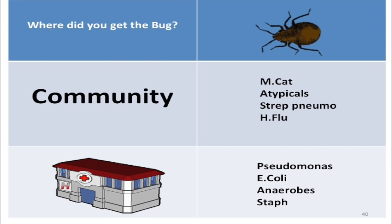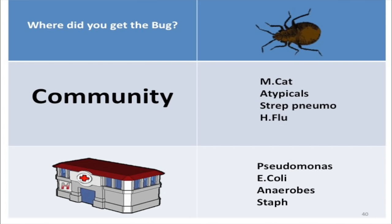For pneumonia, you must know where they got sick — community-acquired or hospital-acquired. MASH for community-acquired: Moraxella catarrhalis, Atypicals, Strep pneumoniae, H. flu. Hospital-acquired is P's: Pseudomonas, E. coli, Enterobacter, and Staph.